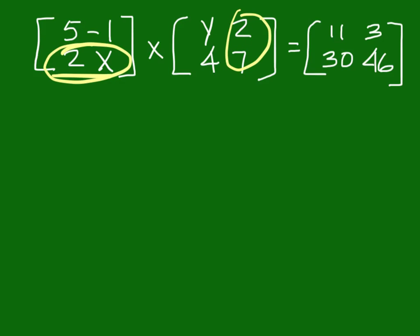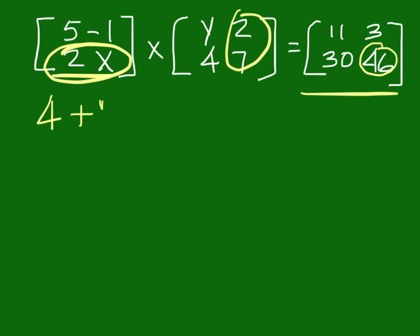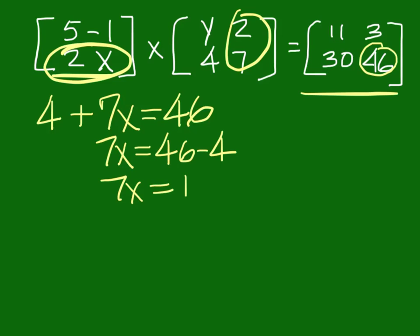Let's use this one. So if we go here and here, that's row 2 in the first one and then column 2 in the second one. What answer on this side is in row 2, column 2? 46. So go back and do the operations — multiplying this row by this column, the first thing you do is 2 times 2, which is 4. And then add to that X times 7, so that's 7X. We know it pertains to 46. So 7X is 46 minus 4, which is 42. That gives us an X value of 6.